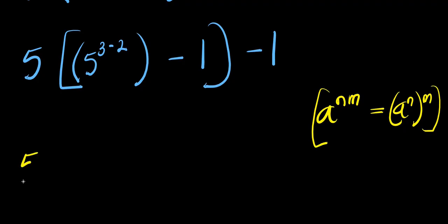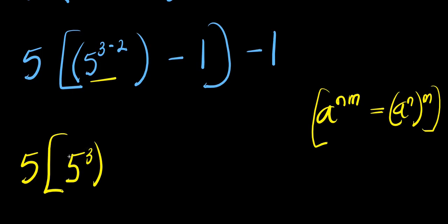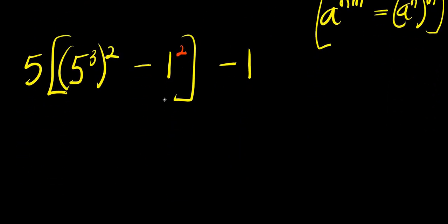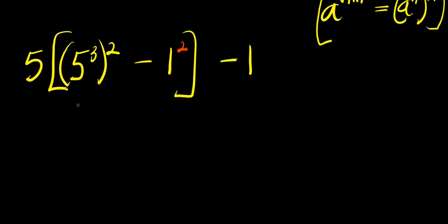So we are going to have 5 times 5 power 3 to the power of 2, minus 1, minus 1. I can decide to raise 1 to the power of 2 as well, because 1 power 2 is the same thing as 1. Now at this point I can make use of the difference of two squares, since we have something squared minus something squared.